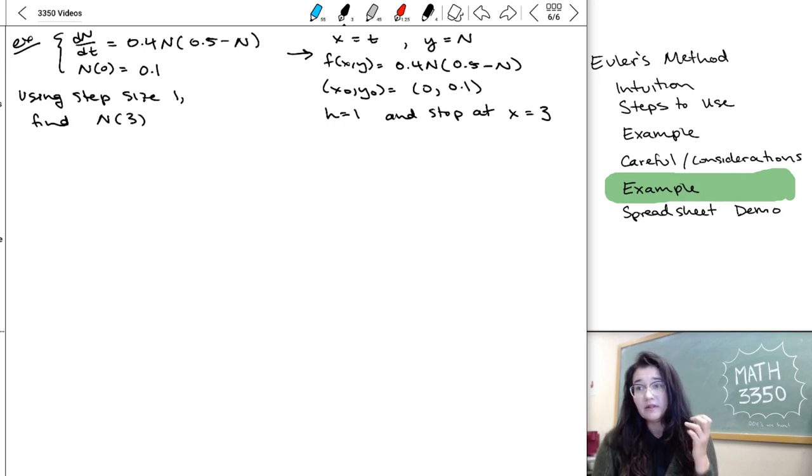So in this case, that means h equals 1, and we want to stop at x equal to 3. Or it's t, but I'm going to use x and y in the steps because that's what we're used to from the Euler approximation outline.